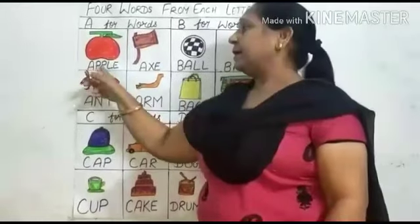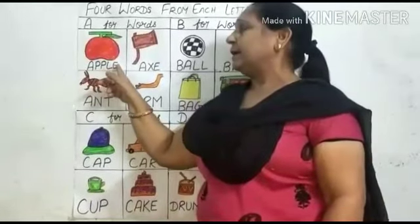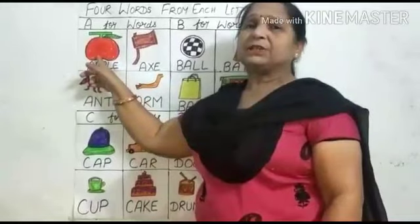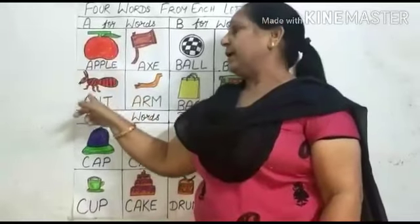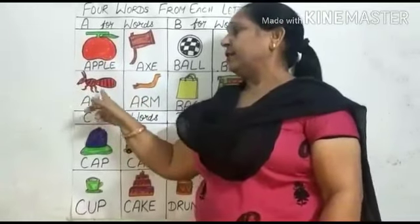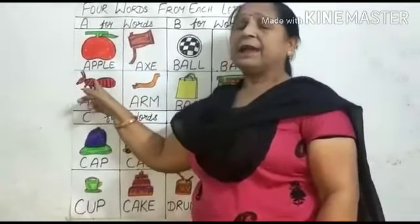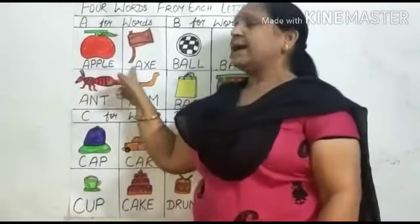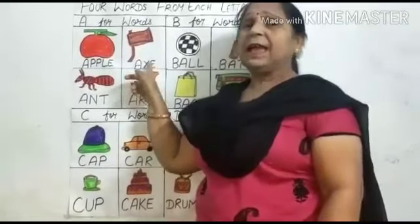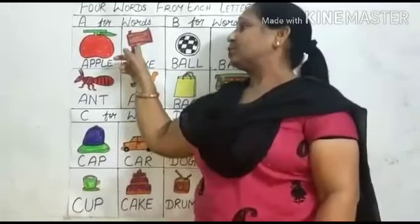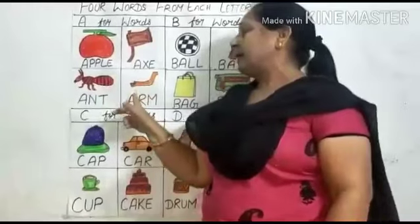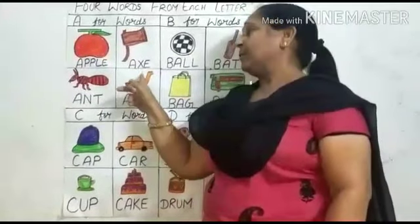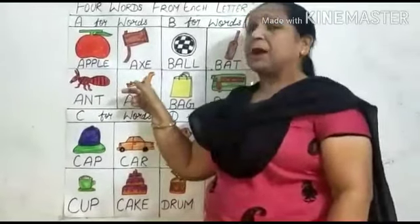A-P-P-L-E. Apple. Apple means save. A-N-T. Ant means GT. A-X-E. X means Kulari. A-R-M. Arm. Arm means bump.